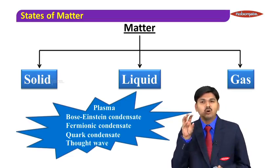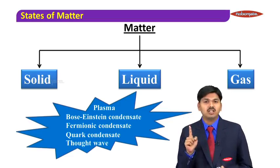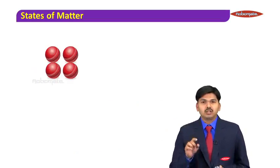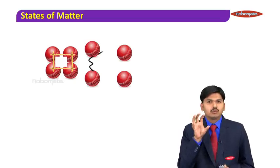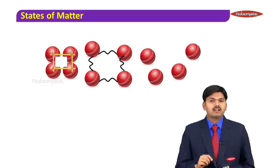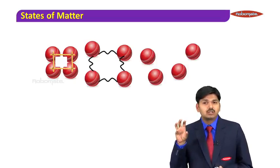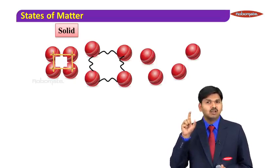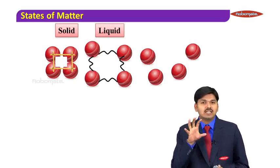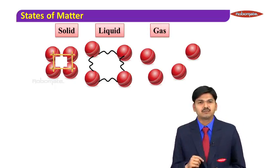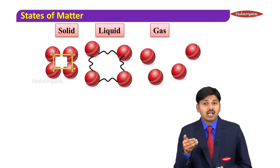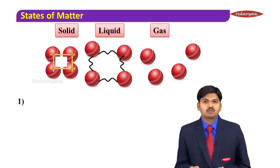Let me concentrate on these three types: solid, liquid, and gases. If you look at these pictures, you can come across some interesting facts — the first picture is tightly bound, nothing but solid; the second one is slightly distributed, nothing but liquid; the last one is completely dispersed, nothing but gases. By looking at this picture, I think we can make out some interesting points.